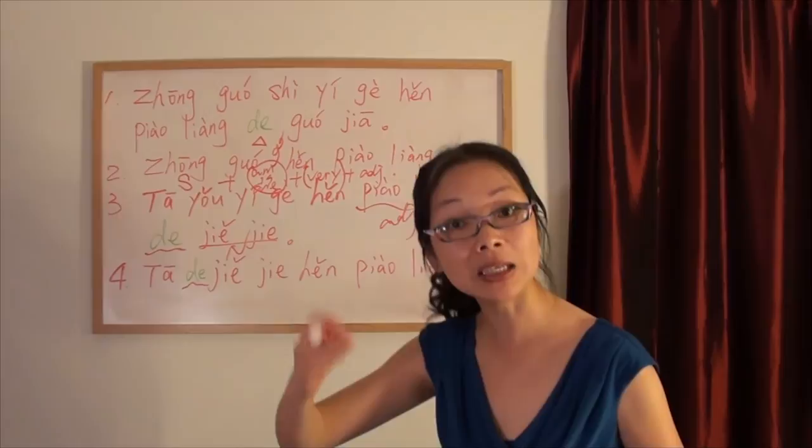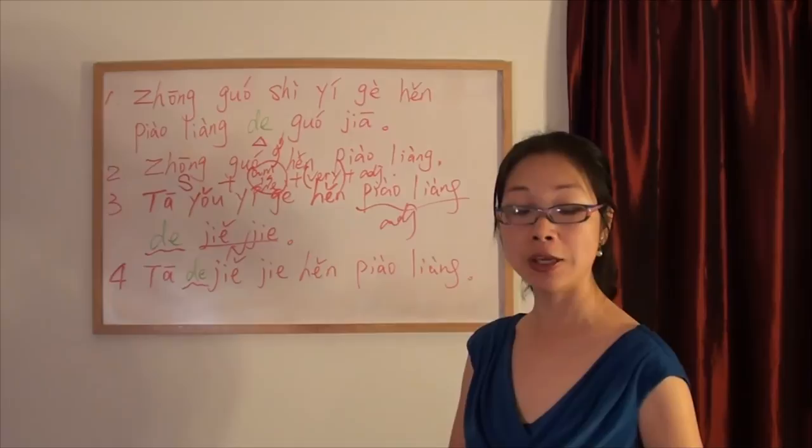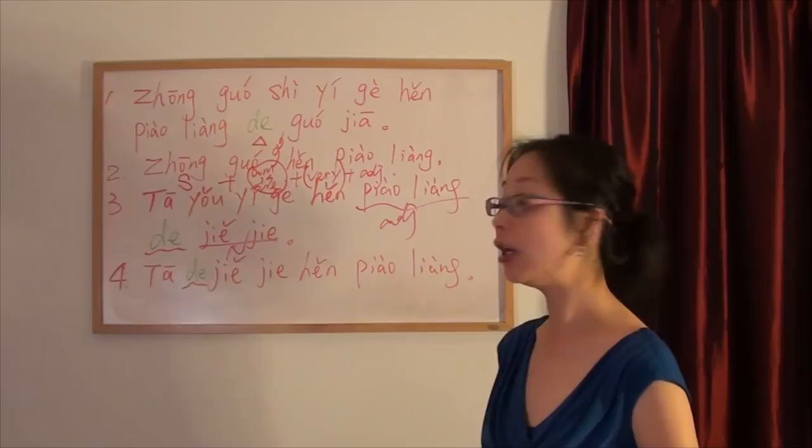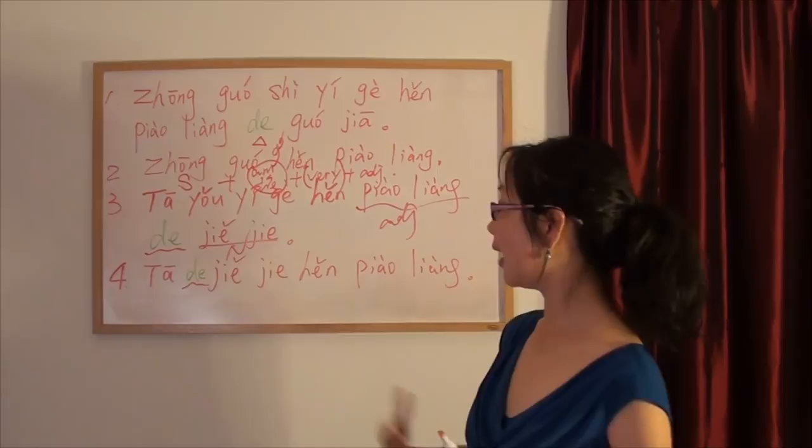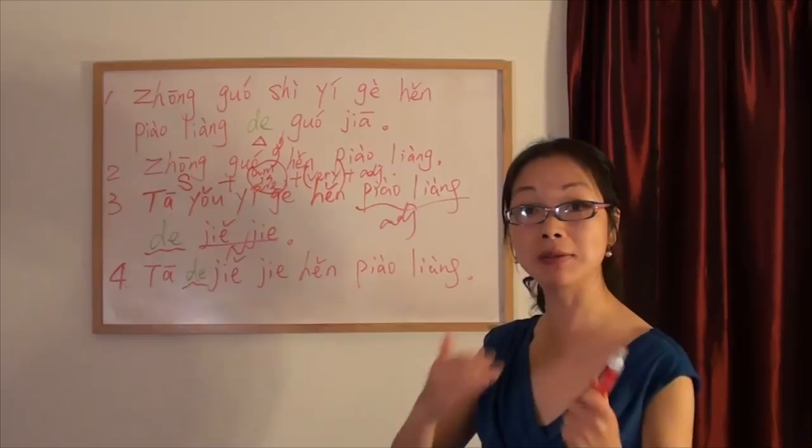When de is used as the possession function, sometimes you can skip it. And you should know when you can skip it. Right? So in this context, you can say, 她姐姐很漂亮. That depends on how close they are. You got it?